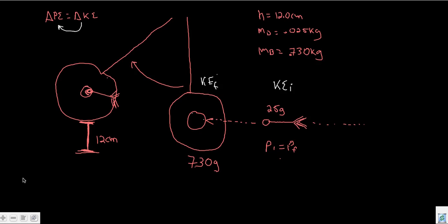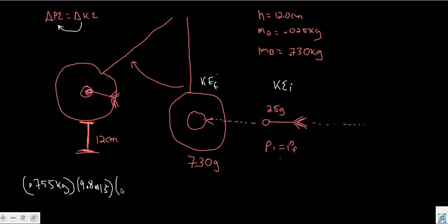Potential energy is mass times gravity times height, and we have all of that. The combined mass is 0.025 kg plus 0.730 kg — converting grams to kilograms — giving us 0.755 kilograms. The acceleration of gravity is 9.8 m/s², and the height is 12 centimeters, which we convert to 0.12 meters. That potential energy equals whatever kinetic energy drove it up to that height.